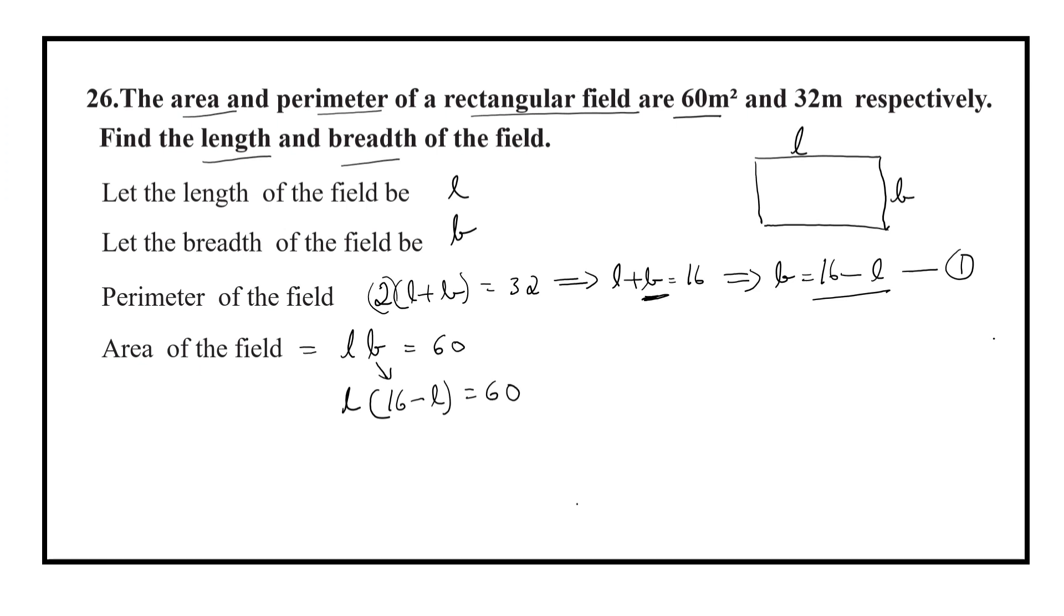Now 16 into L is equal to 16L. L into minus L is equal to minus L square is equal to 60. Now write the equation in the standard form. That is L square minus 16L plus 60 is equal to 0.